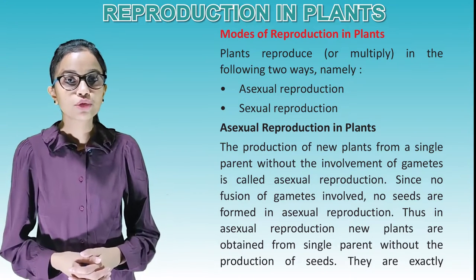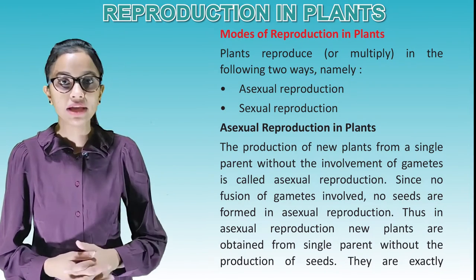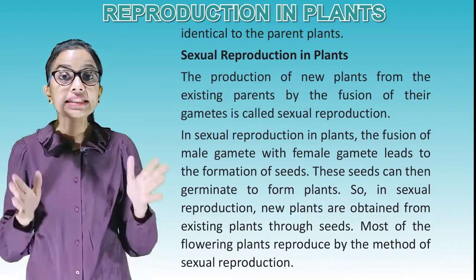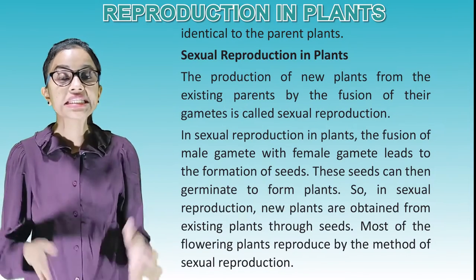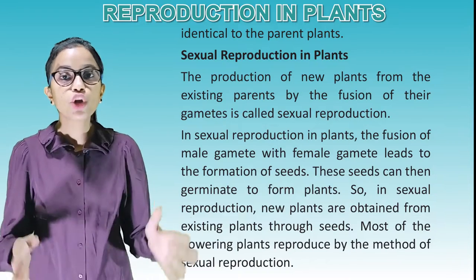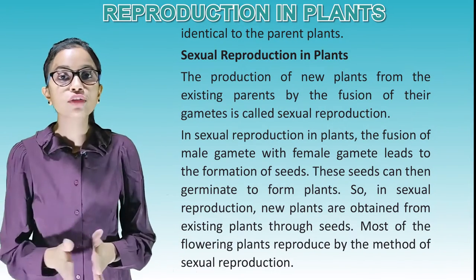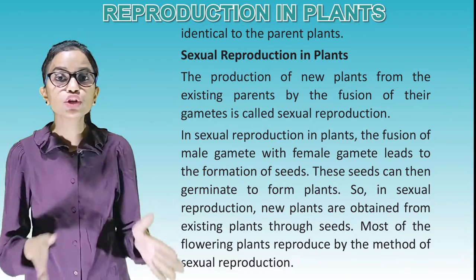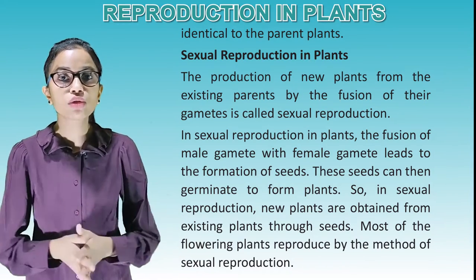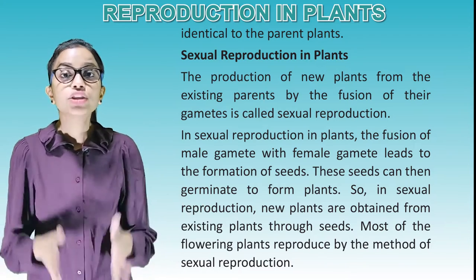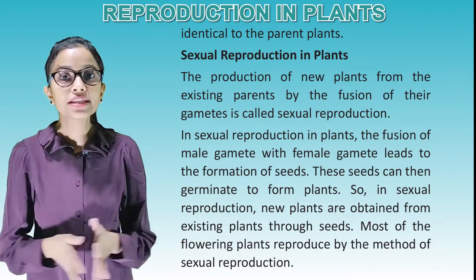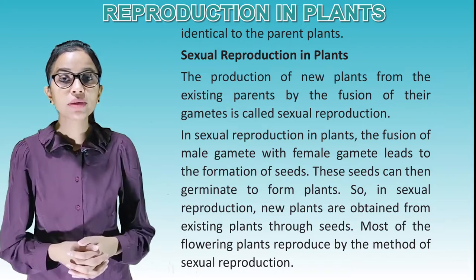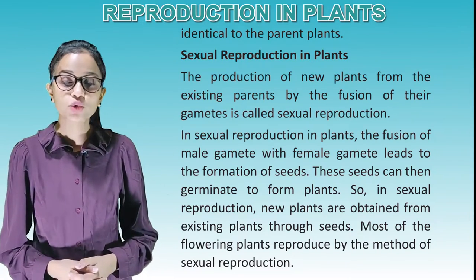In asexual reproduction, new plants are obtained from a single parent without the production of seeds. They are exactly identical to the parent plant. The production of new plants from existing parents by the fusion of their gametes is called sexual reproduction. In sexual reproduction in plants, the fusion of male gametes with female gametes leads to the formation of seeds. These seeds can then germinate to form plants. In sexual reproduction, new plants are obtained from existing plants through seeds. Most flowering plants reproduce by sexual reproduction.